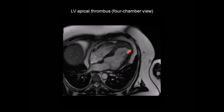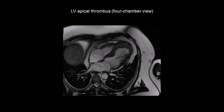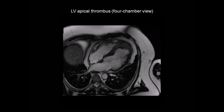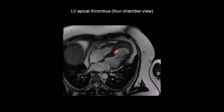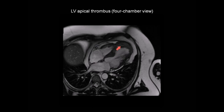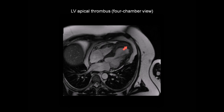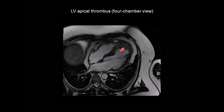It pushes outwards during systole. As a consequence of this area of akinesia, a large laminated thrombus has built up at the apex, and we can see this on the cine-CMR image.